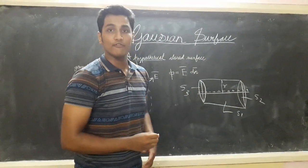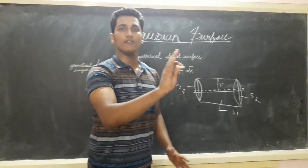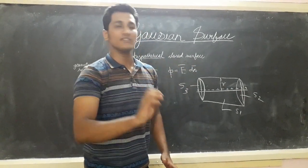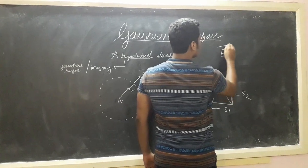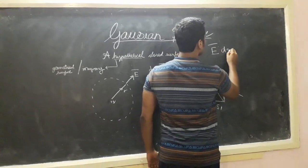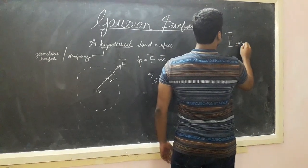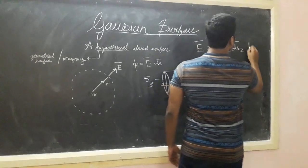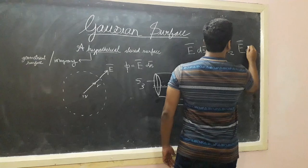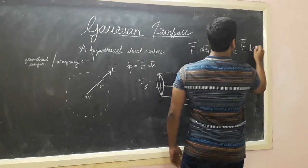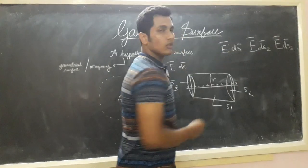and S3. So now what is going to be the flux? What is flux? Dot product of electric field and its surface area. Electric field, surface area first. Electric field, surface area of second. Electric field, surface area of third surface.